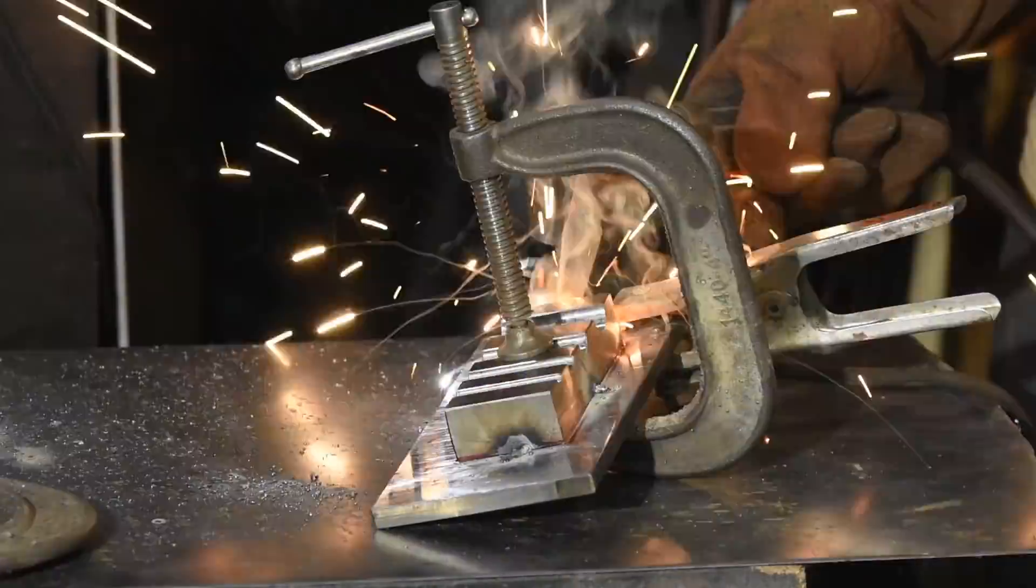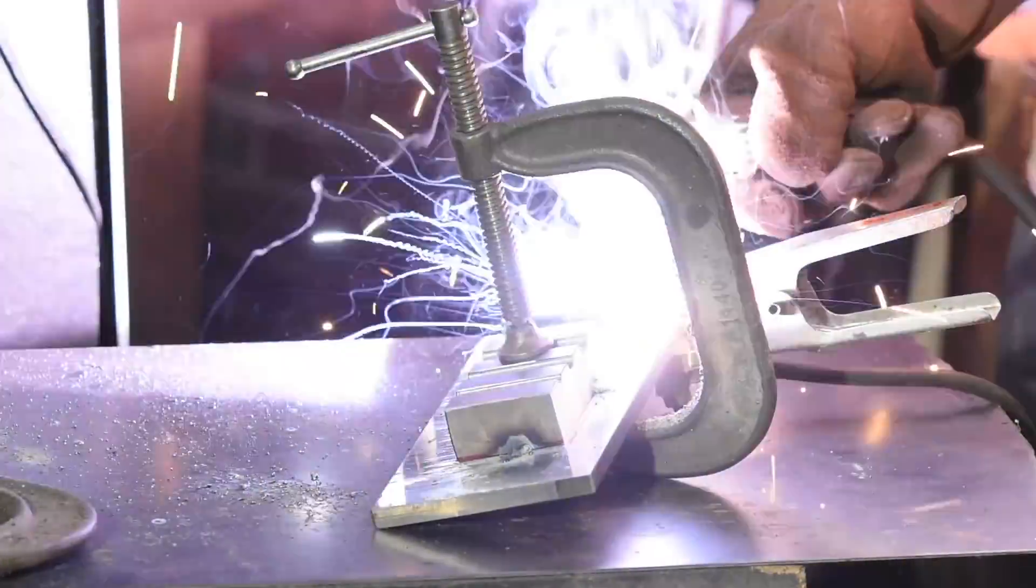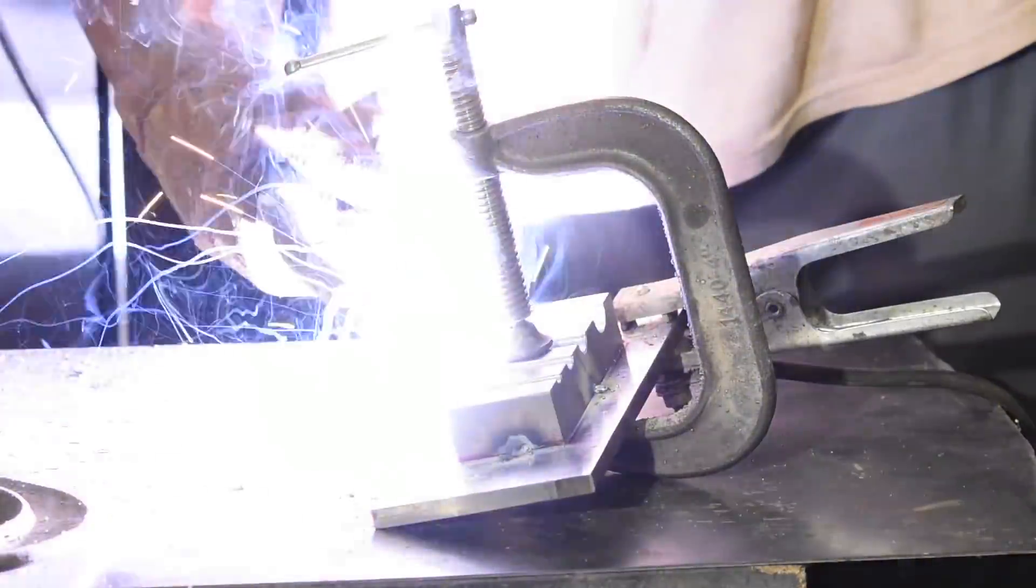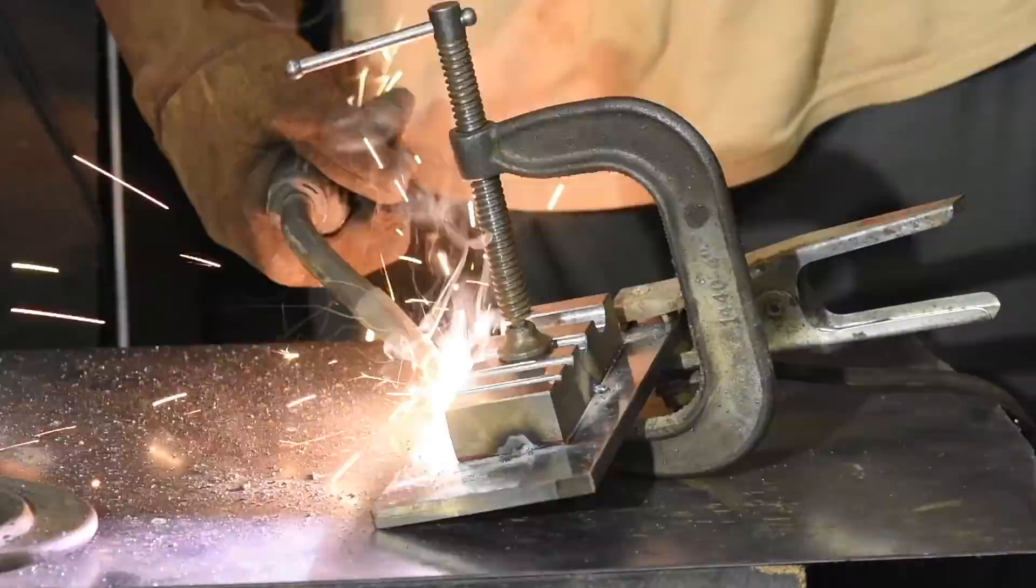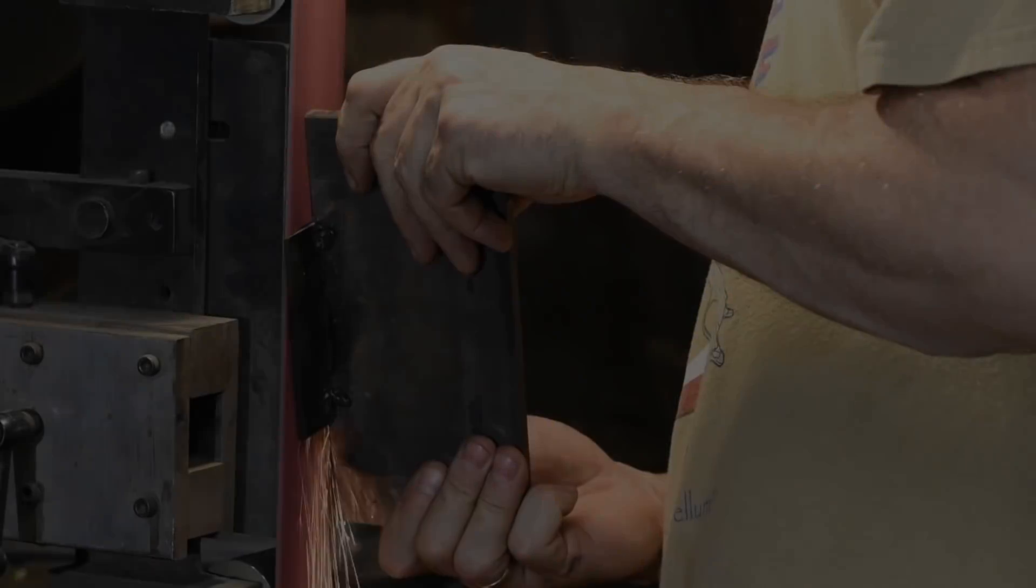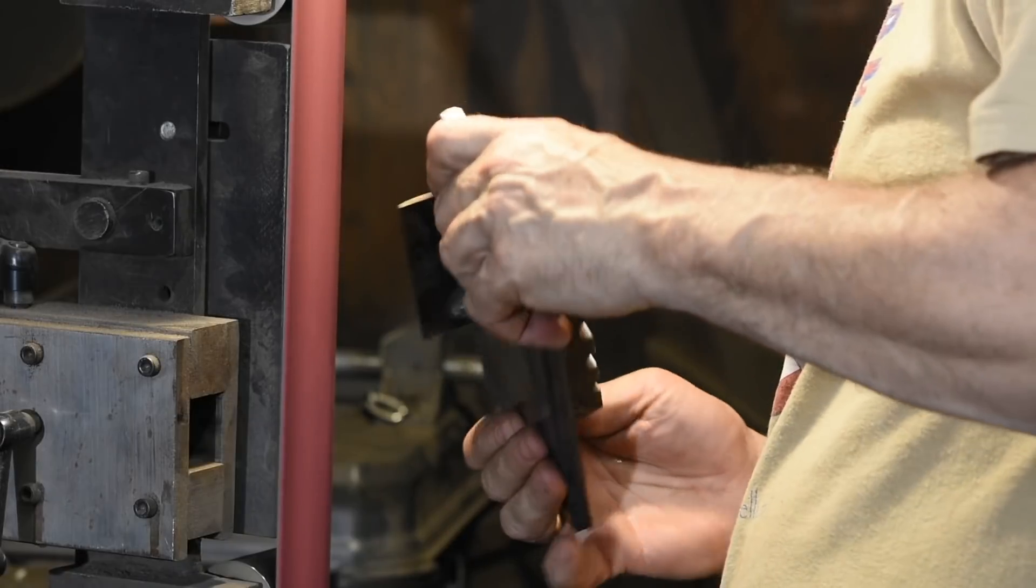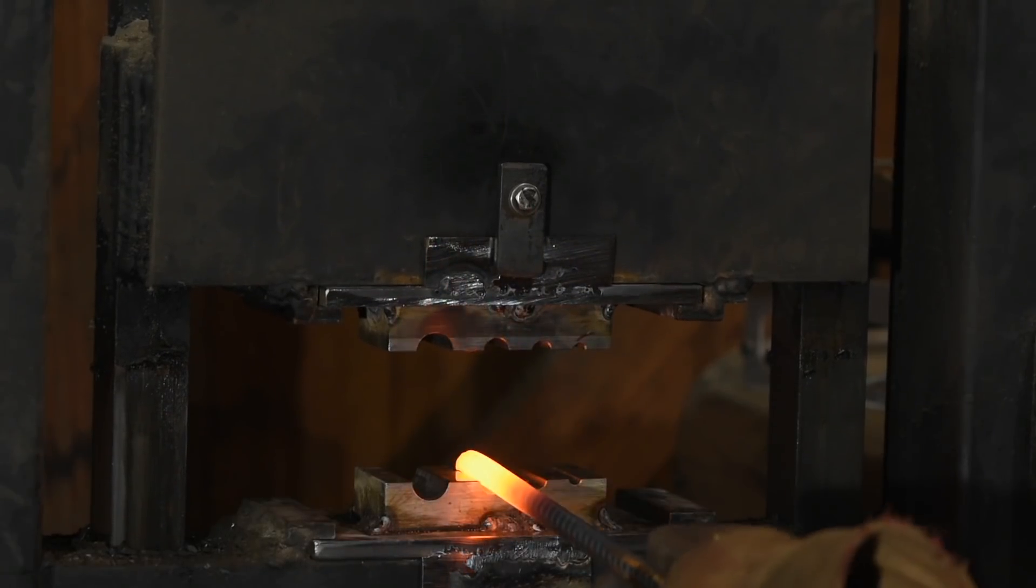Now if these were just flatting dies or drawing dies or something, none of this would be critical, and I'd never in a million years go to all this trouble. But for this, it does need to be right. I'll also clean them up on the belt grinder to get rid of some of the excess weld material and some of the weld spatter. And that's it. Let's test it out.